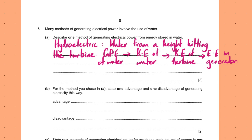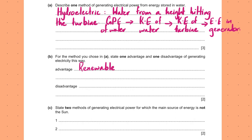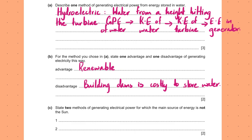State one advantage and one disadvantage of generating electricity this way. The advantage is obviously that it's renewable — hydroelectric power is not going to run out anytime soon. The disadvantage of hydroelectric power: building dams is costly to store the water, and you can also add that dams disturb the natural landscape.